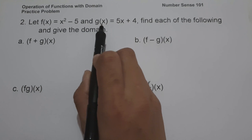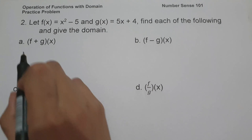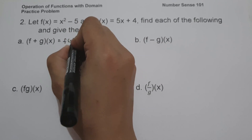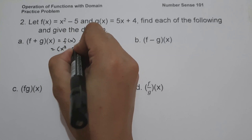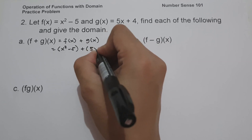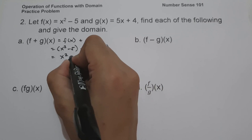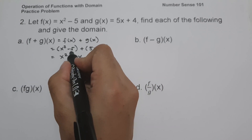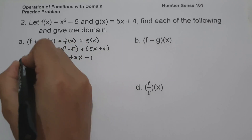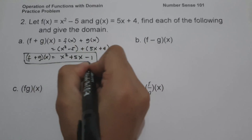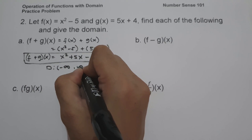For Example 2, let f(x) = x² − 5 and g(x) = 5x + 4. Find each of the following and give the domain. On letter a, (f+g)(x) = f(x) + g(x) = (x² − 5) + (5x + 4) = x² + 5x − 1. The domain is from negative infinity to positive infinity.